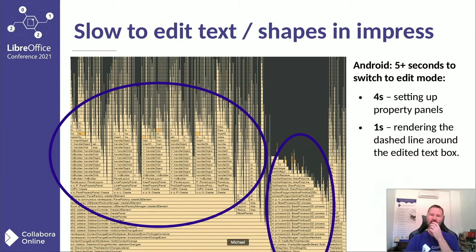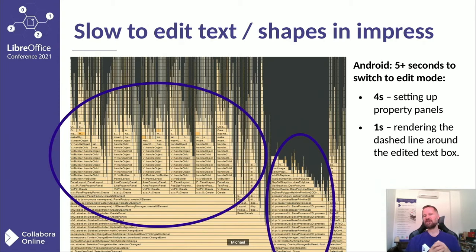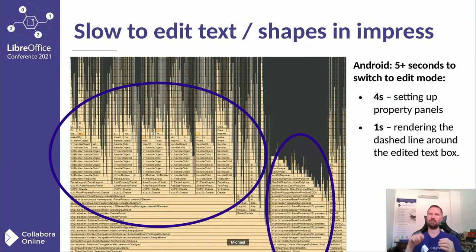One problem we had, particularly in our mobile version on Android, was the performance of editing text shapes. When you tap to select text you'd expect to get a keyboard and be able to edit, but it was taking initially something like five seconds to actually get the keyboard up, during which time people had tapped a whole lot more — unshippably bad. One problem was setting up the property panels: we'd parse XML describing the property panel, create all these little widgets, continually relay them out, then throw them away again shortly afterwards, often several times during a context change.